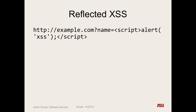Someone types this into their browser or is sent this link. It makes an HTTP request to the server. The PHP code starts processing — it looks up in the URL what value had the key 'name', which is going to be the string: start script, alert, cross-site scripting, end script.